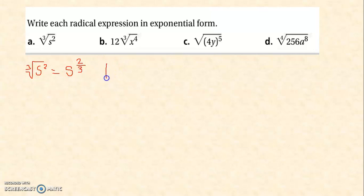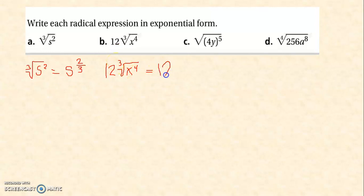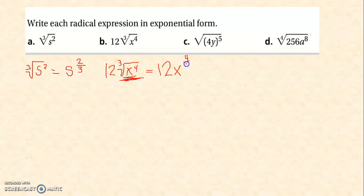Letter B: 12 times the cube root of x raised to 4. Observe that 12 is outside the radical sign. The exponent of 12 is 1, so you just write 12. No need to write the exponent of 1 for the coefficient. What we are rewriting is the cube root of x raised to 4. So you write x with 4 as the numerator and 3 as the denominator, giving x raised to 4 over 3. The answer is 12 times x raised to 4 over 3.